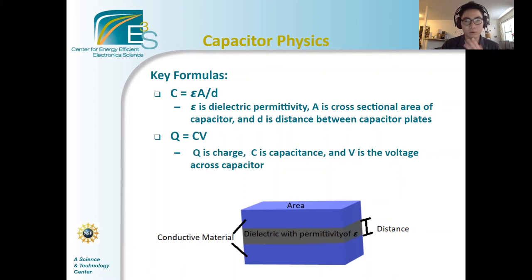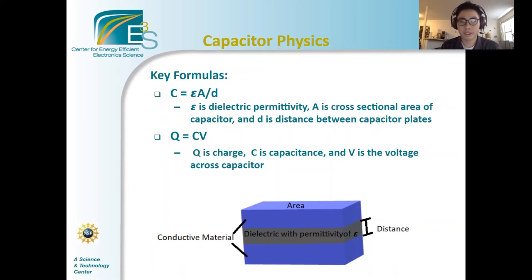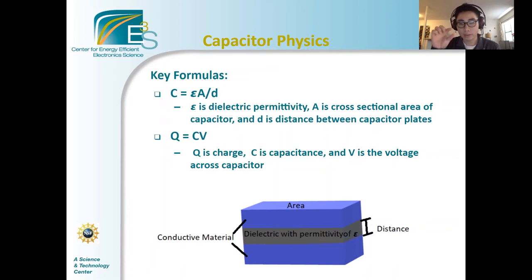This formula can be used to determine design requirements for a given capacitor. For example, if you want your capacitor to have a certain capacitance, you can figure out what the area of the two plates should be or the distance between them. The second formula is Q equals CV, where Q is the amount of charge on the plate, C is the capacitance, and V is the voltage across the capacitor. This represents the relationship between the charge on the plate and the voltage across the capacitor. In the diagram, the blue area shows the parallel plates, and on the right is the distance between the two plates. In the middle there is a gap of dielectric material, which will have a certain permittivity depending on the material.